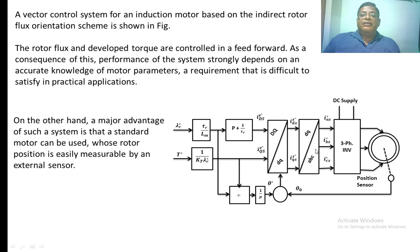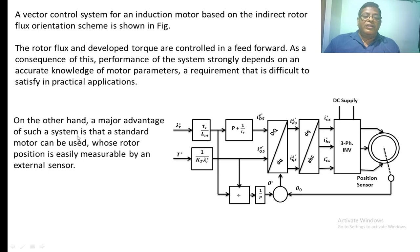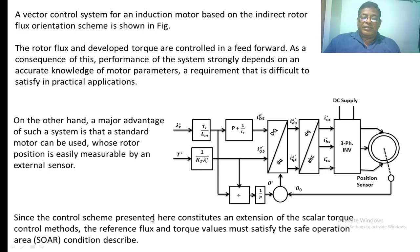In the case of indirect rotor flux control of an induction motor, the method is highly dependent upon the rotor parameters, which in turn strongly depend upon the operating point of the induction motor, making it difficult to satisfy certain requirements. On the other hand, a major advantage of this system is that a standard motor can be used, whose rotor position is easily measured by external sensors. The control scheme presented here constitutes an extension of the scalar torque control of the induction motor, so reference flux and torque values must satisfy the safe operating conditions.